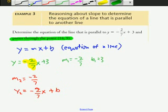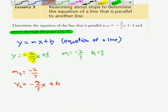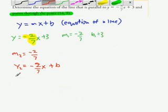Let's try doing that. We're going to say our y is 9 and our x is 14. So 9 equals negative 2 over 7 times 14 plus b.